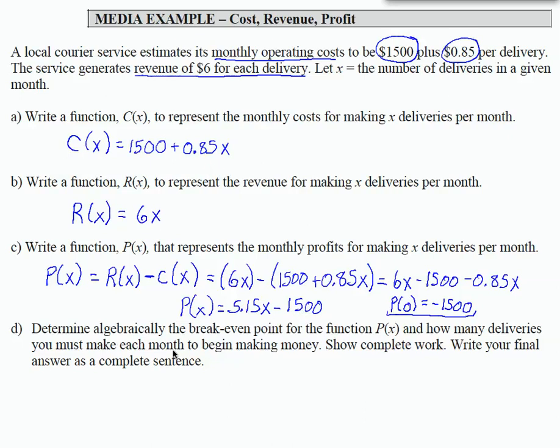Alright, let's look at part D because what we usually want to know with the profit function is how many deliveries do we need to make, or how many items do we need to sell, or whatever the situation is to break even. Because the break even point is where we're even money with revenue and cost. When we do a little bit more, we make a few more deliveries, we're going to start to make money.